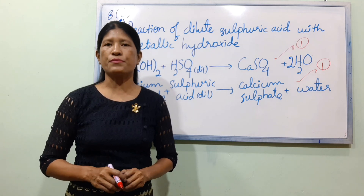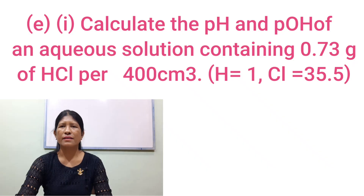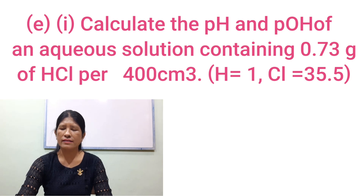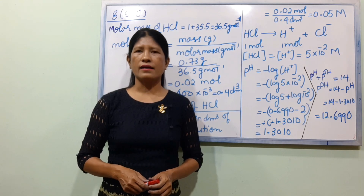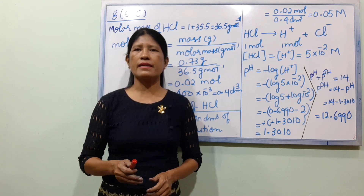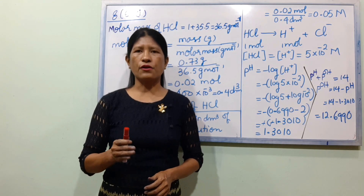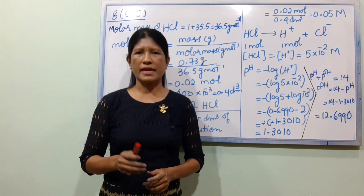So let's take a look at the pH of an aqueous solution containing 0.73 g of HCl per 400 cm³. Let's take a look at the HCl volume and calculate the pH.